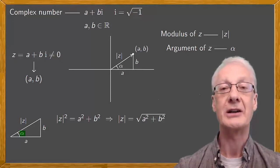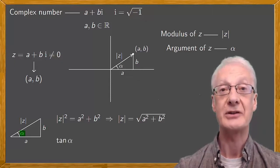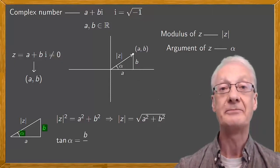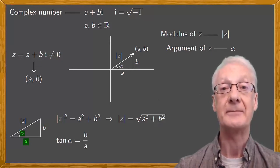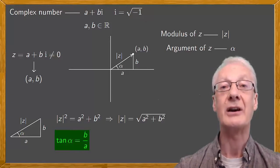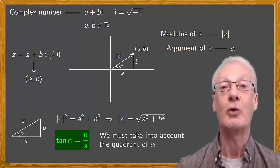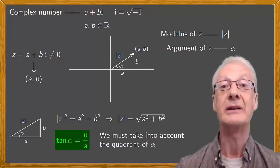As for the argument alpha, its tangent is represented by the opposite side b divided by the adjacent side a. From this expression, we can calculate the argument of a complex number, but we must take into account the quadrant in which the point ab is located, and work with the reduction of this to the first quadrant.